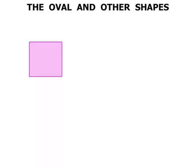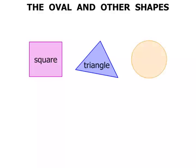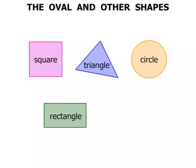Now a recap on some other shapes. Square. Triangle. Circle. Rectangle. And our new shape today, the Oval.